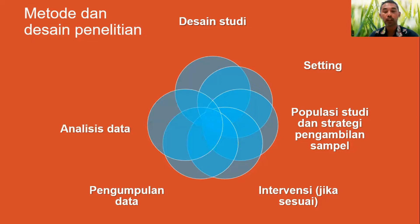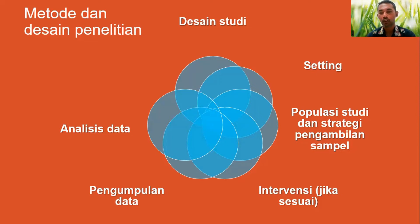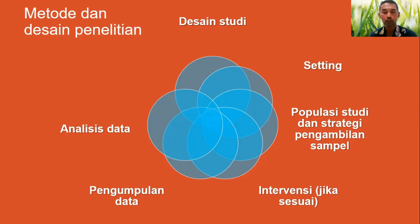Kita perlu memikirkan analisis data. Kalau kuantitatif, perlu dijelaskan proses analisis datanya. Kalau kualitatif, perlu menjelaskan jenis analisis data seperti apa — apakah menggunakan model Miles dan Huberman, atau menggunakan aplikasi NVivo. Kita perlu jelaskan secara ringkas tapi jelas sehingga pembaca memahami bagaimana data-data itu dikumpulkan dan dianalisis.